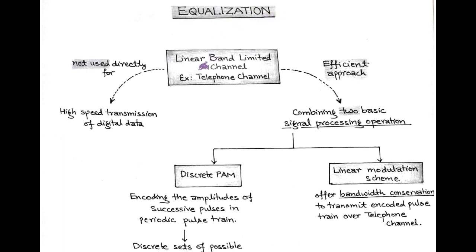In the baseband transmission of digital data, there is a requirement of a Nyquist channel, that is a type of band-limited channel and it is linear type, for example a telephone channel. In order to get high speed transmission of digital data, this linear band-limited channel is not directly used.